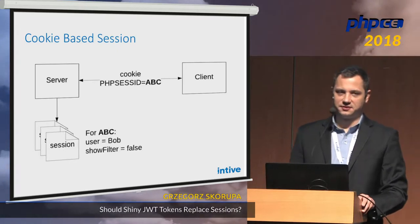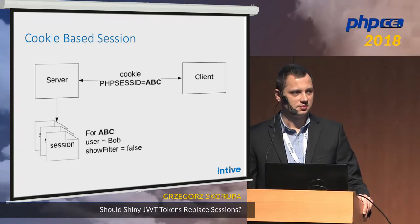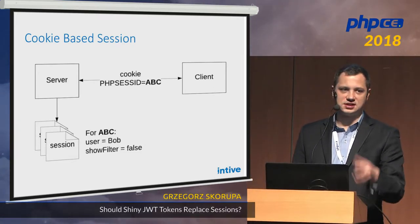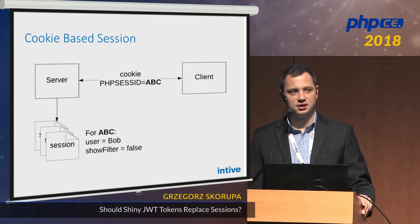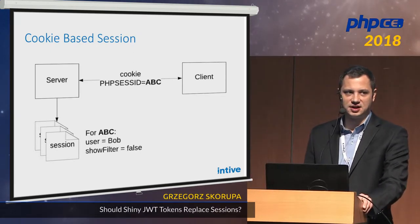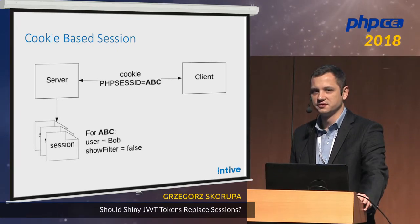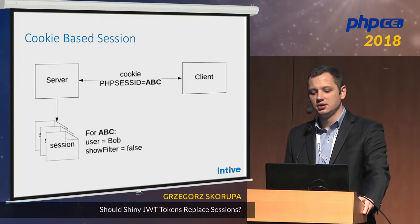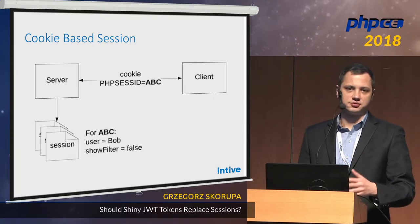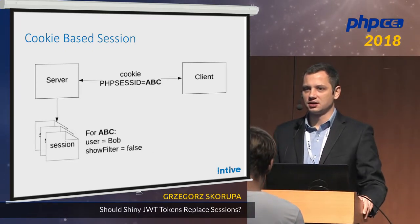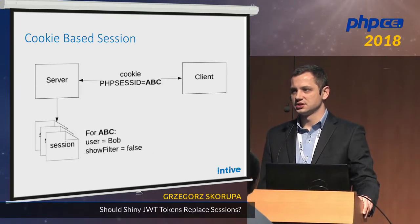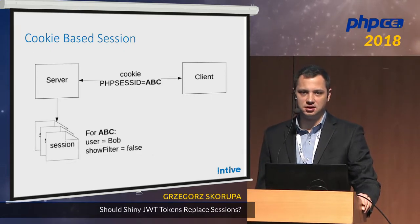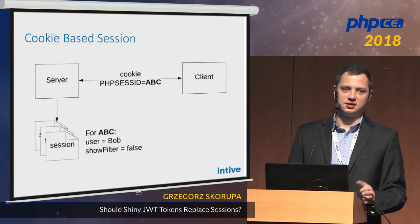Let's start with something really obvious: the old cookie-based session. I guess everybody knows how it works, but just to set the ground. The client makes a request to the server. The server creates some file on a hard drive, at least in the default setup, with some user-associated information, and issues back an ID for the session in a cookie. Once the client makes another request, the cookie is there and we can identify the user.